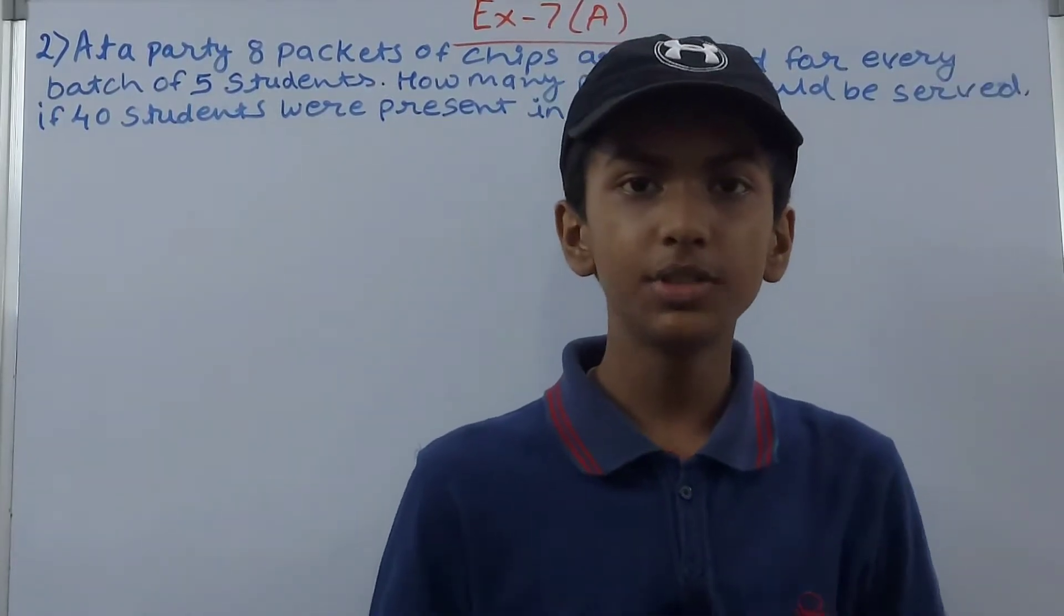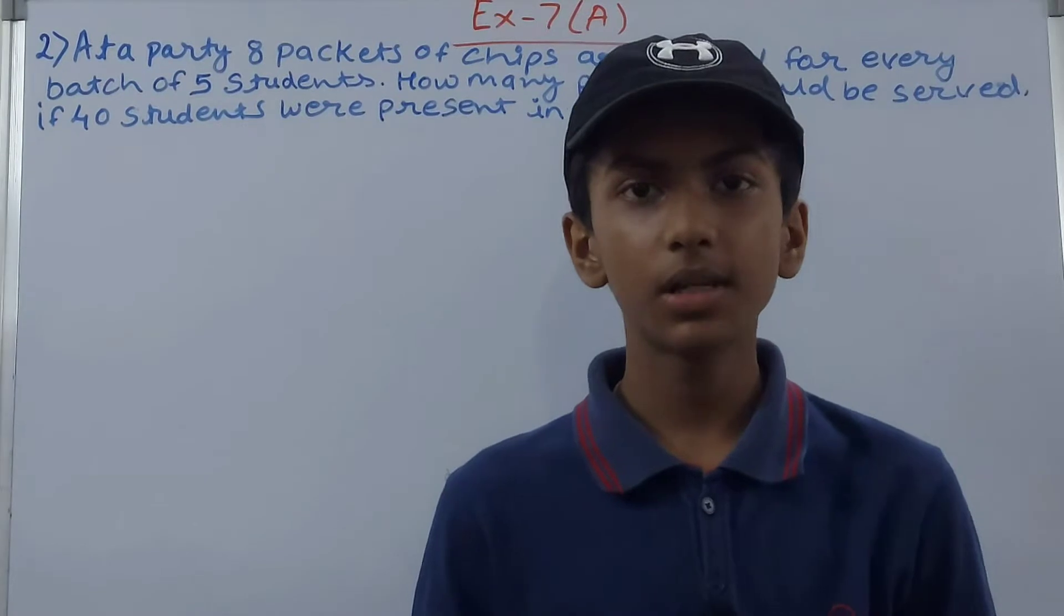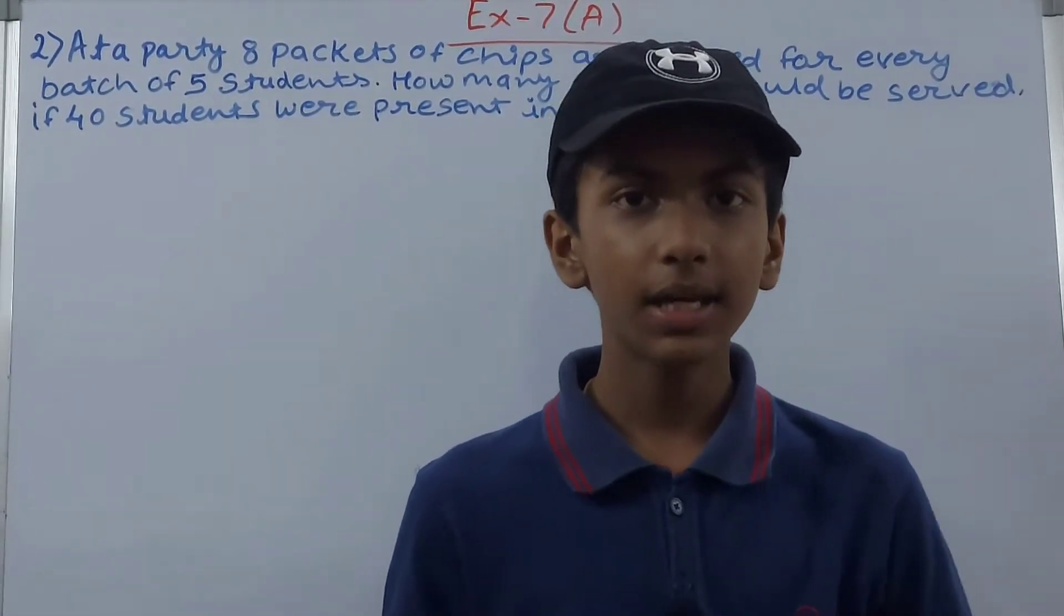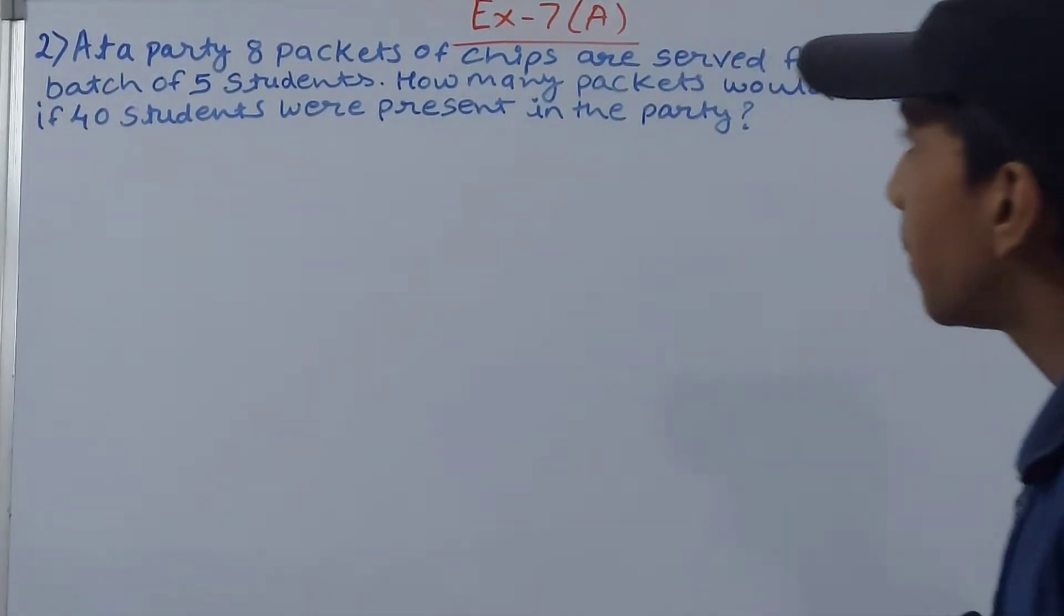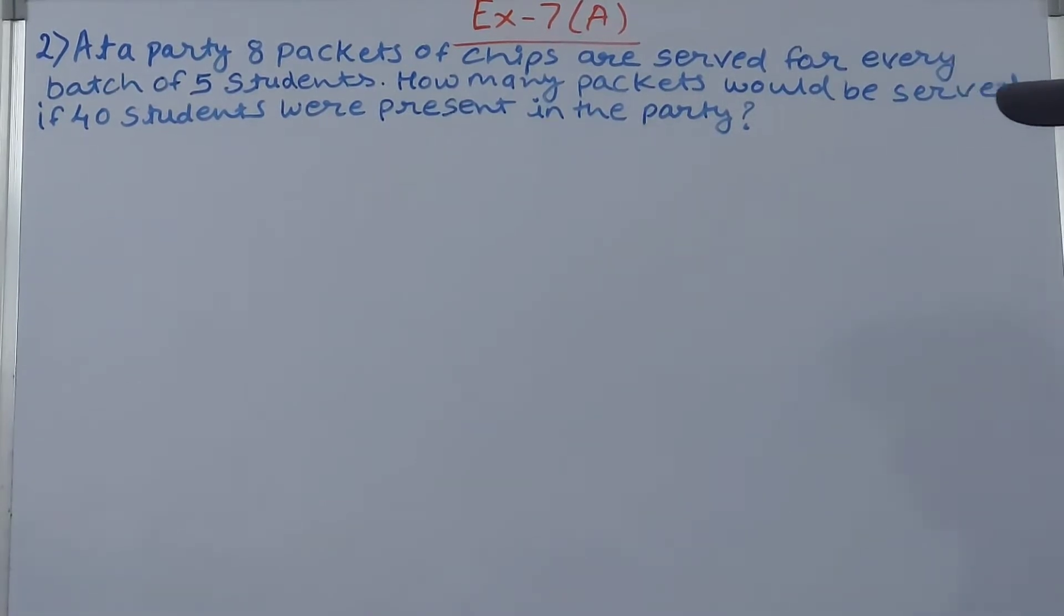Hey friends, welcome back to my YouTube channel, Unlock Your Learning. In this video we are going to solve ICAC Mathematics Class 7, Chapter 7, Unitary Method, Time and Work, Exercise 7A, Question Number 2. This one says at a party, eight packets of chips are served for every batch of five students. How many packets would be served if 40 students were present in the party?